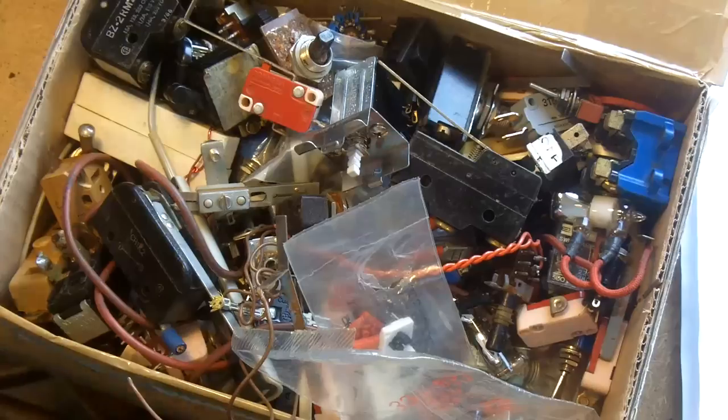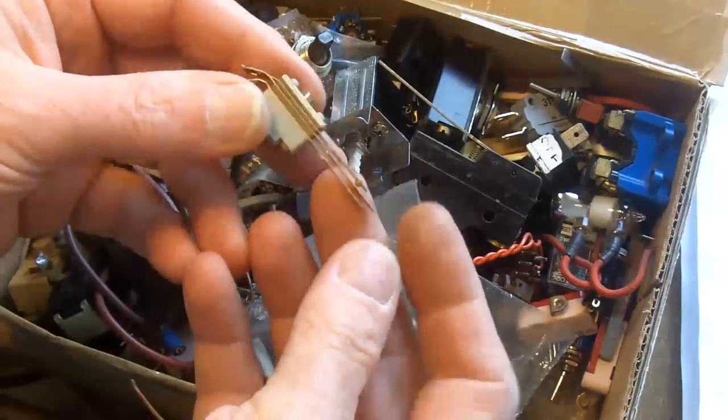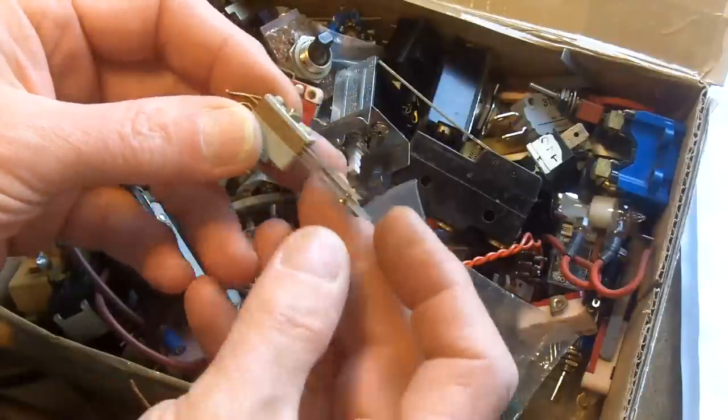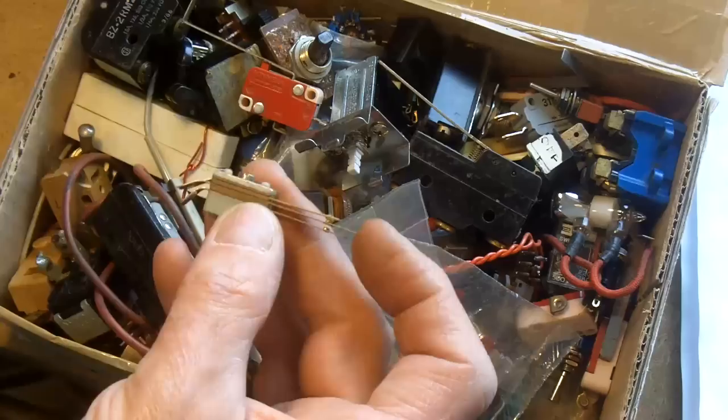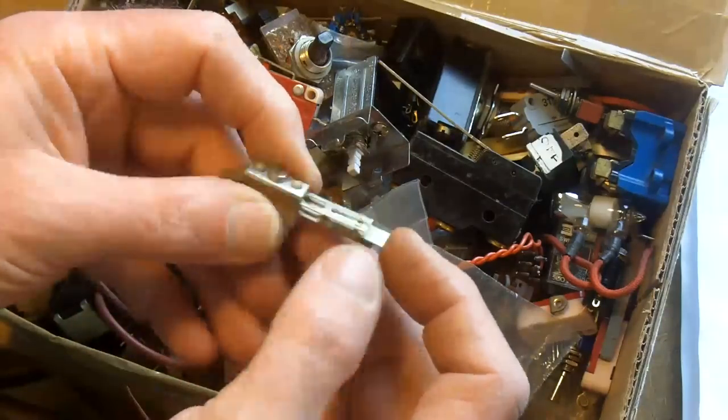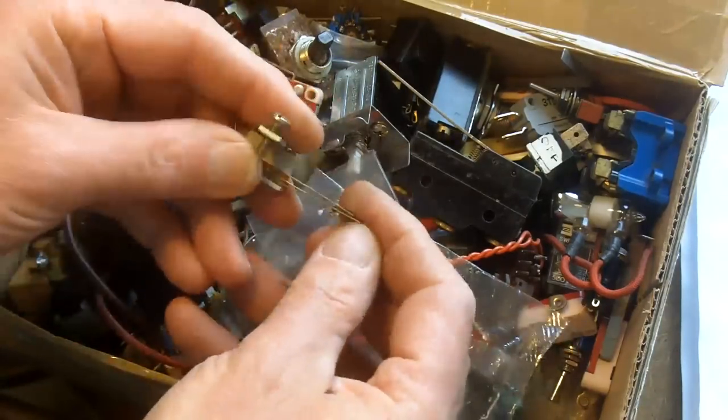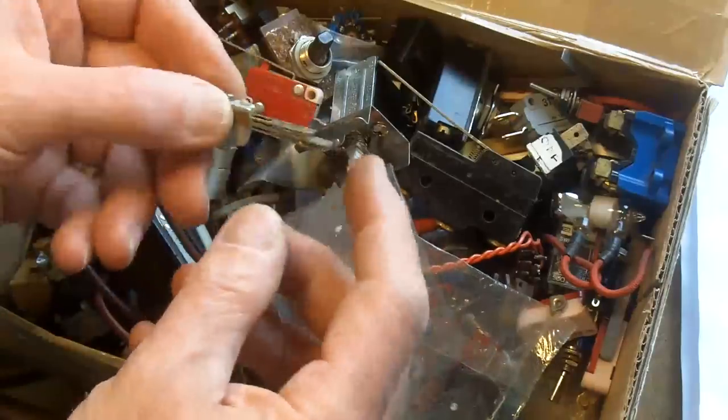And this is some of my switch collection here. What I was looking for was a set of contacts, something like these, and that's typical of what you see in a hip's toggle clock.